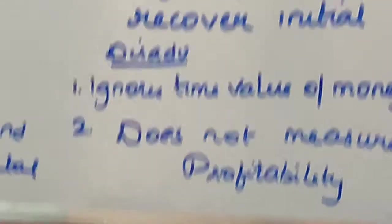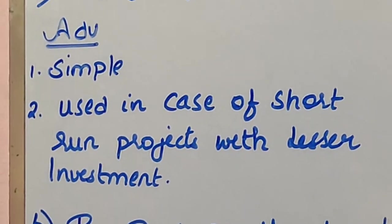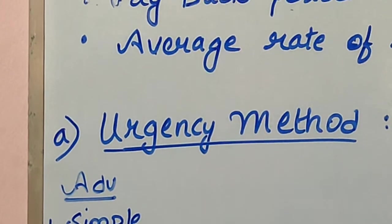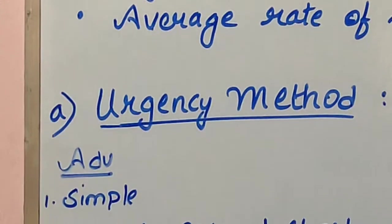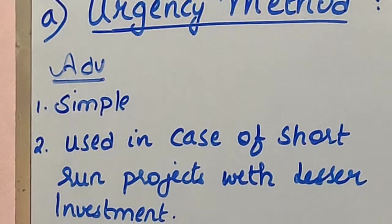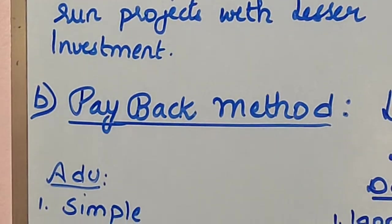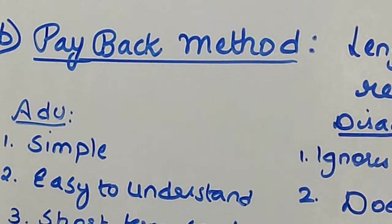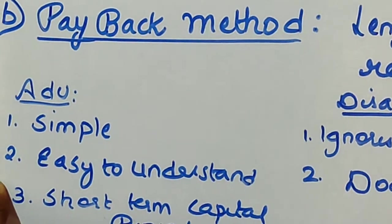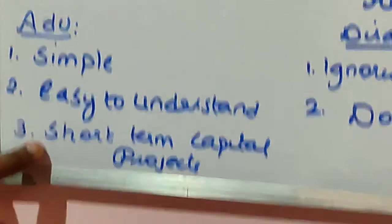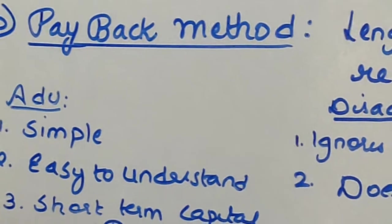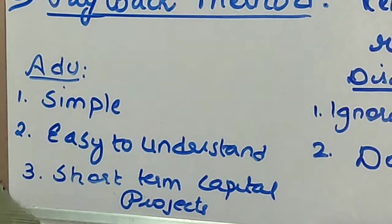The project with the shortest payback period is generally selected. The advantages are: first, it is the simplest method because you only need to look at the payback period. Second, it is easy to understand — no finance or accounting background or educational qualification is generally needed to use this method. Third, if there are short-term projects requiring lesser investment, this method can be aptly applied.